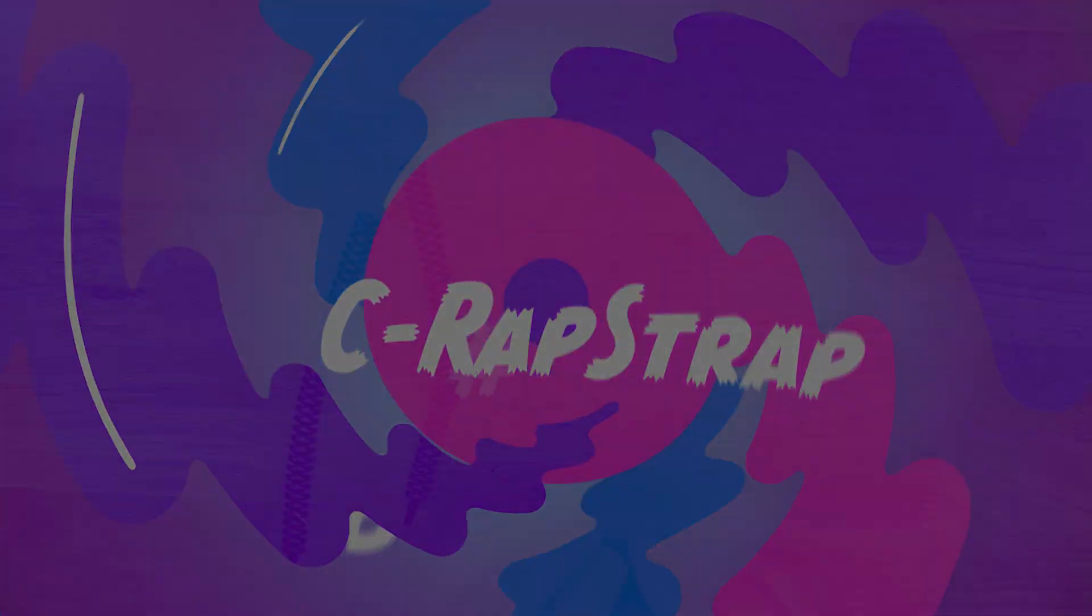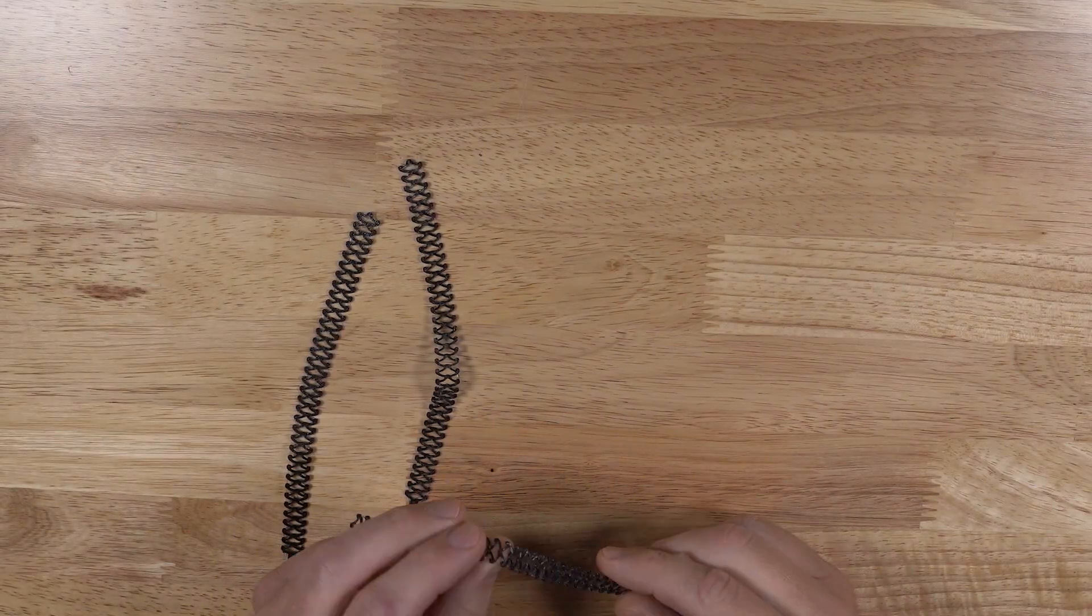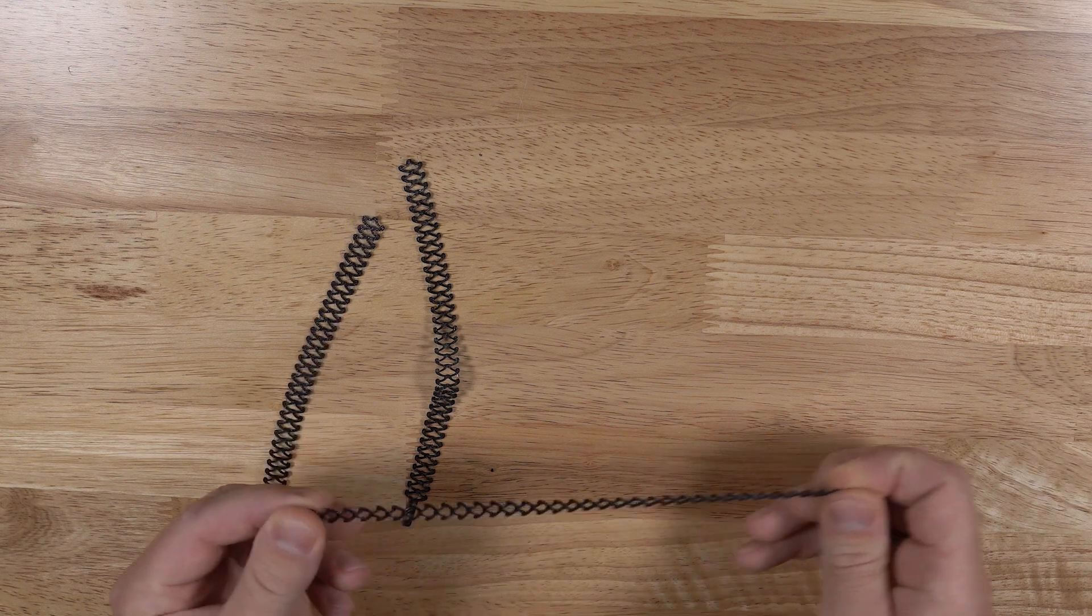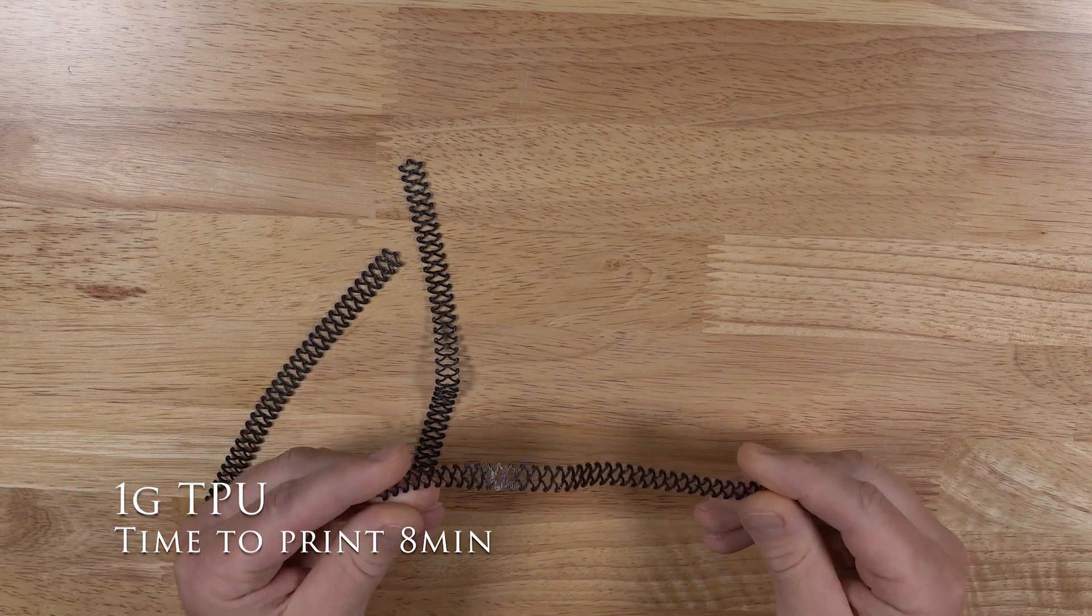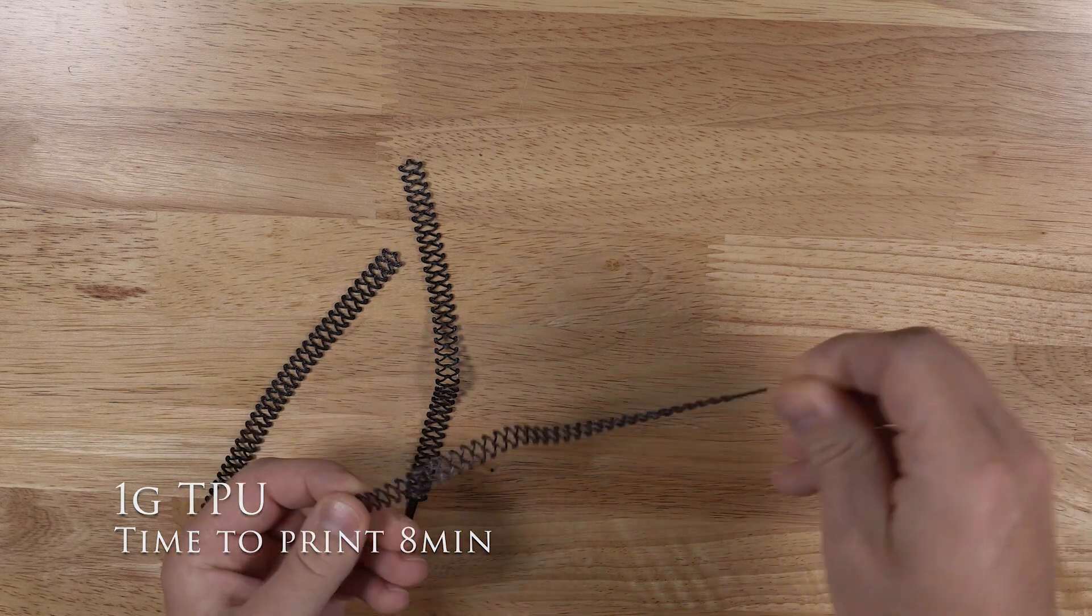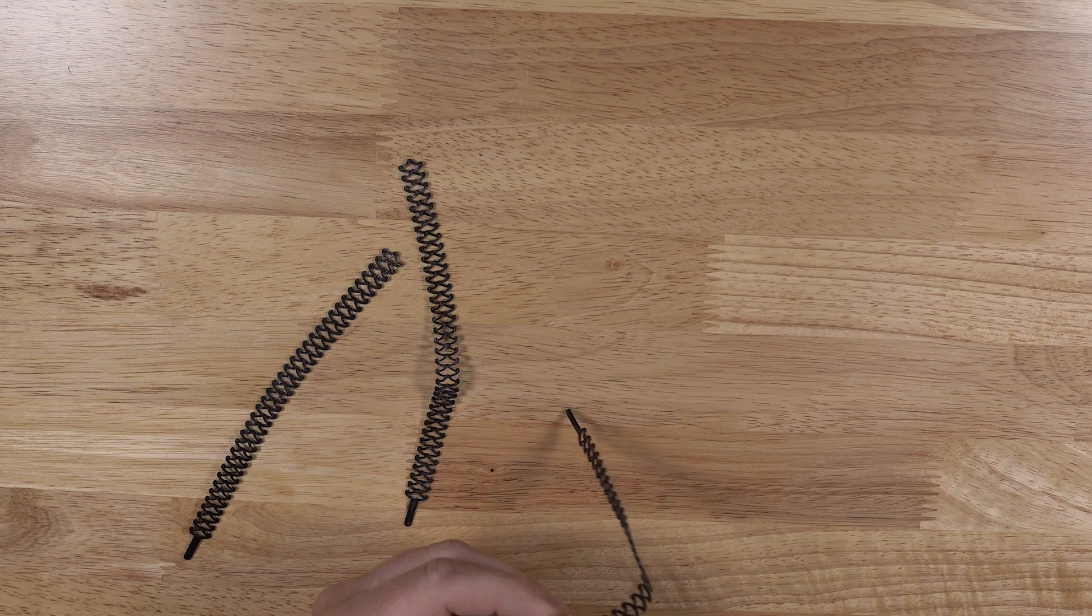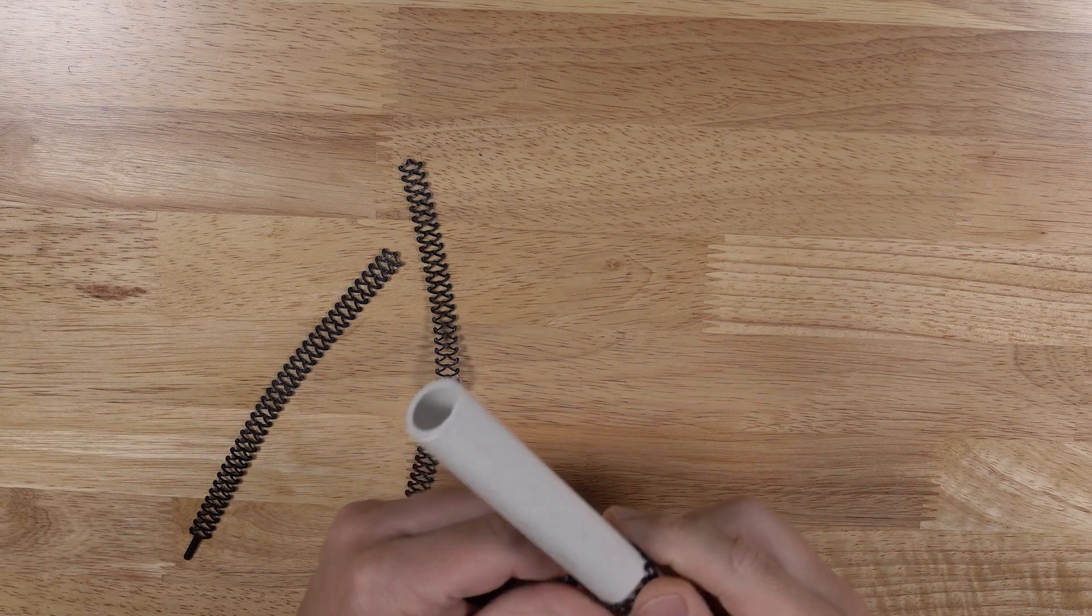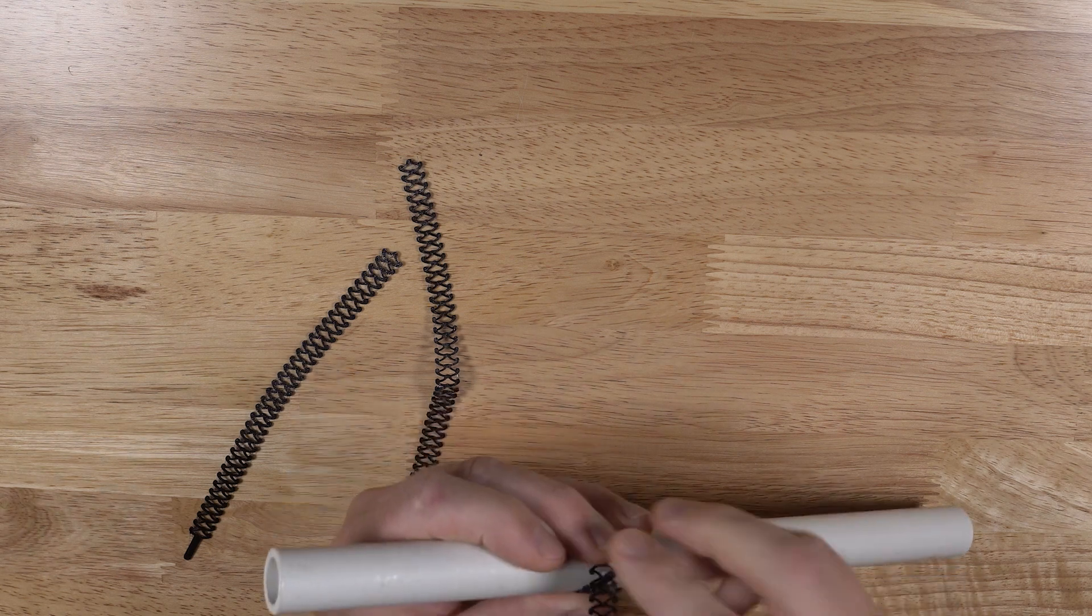Number four is this one. This is called the C wrap strap, possibly crap strap, I don't know, by sp3calic, found over on Thingiverse. This is printed out of TPU. Takes about 1 gram of TPU and about 8 minutes to print, possibly less depending on your printer.